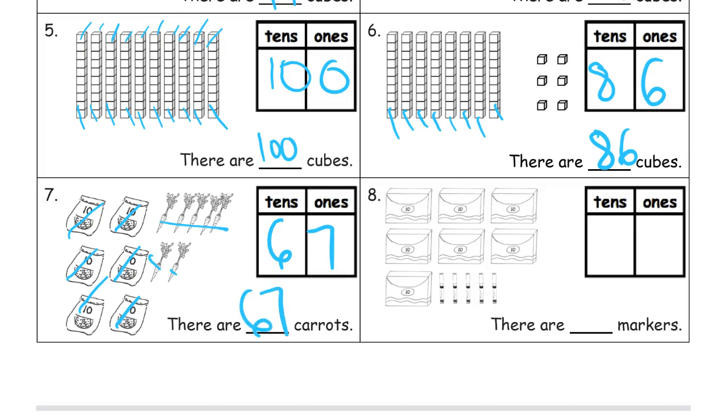And here we're looking at boxes of markers. How many groups of ten are there? One, two, three, four, five, six, seven of those. And how many ones? There's one, two, three, four, five single markers. Seventy-five markers.